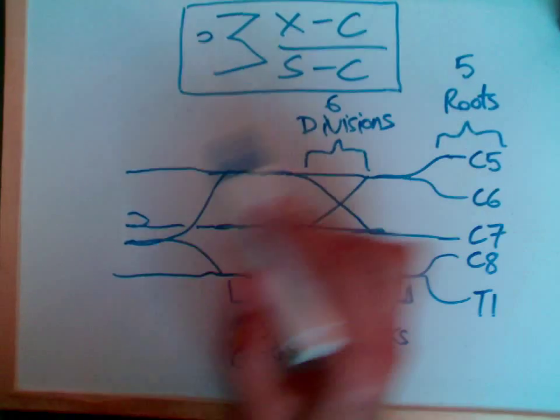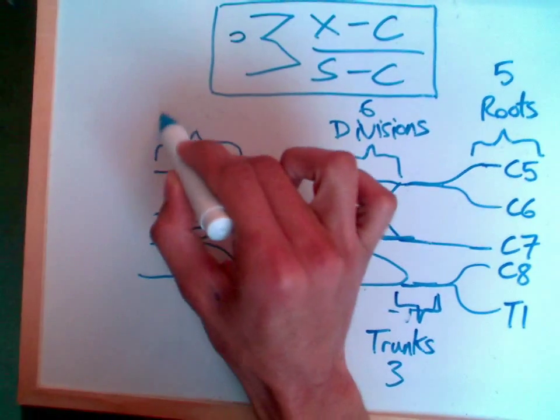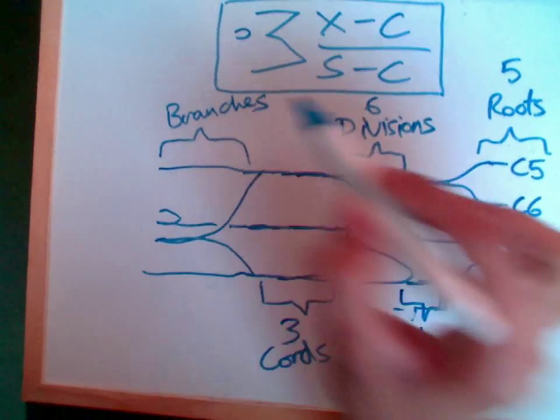And then we have the whole brachial plexus. And of course, this final group of structures, they're known as branches, terminal branches, or peripheral nerves.